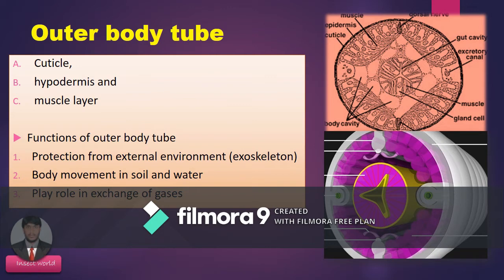The functions of the outer body tube are: it protects the body from the external harsh environment, acts as the exoskeleton, helps in the movement of the nematode body in soil and water, and plays an important role in the exchange of gases through the cuticle.